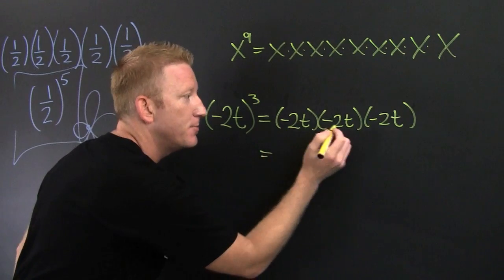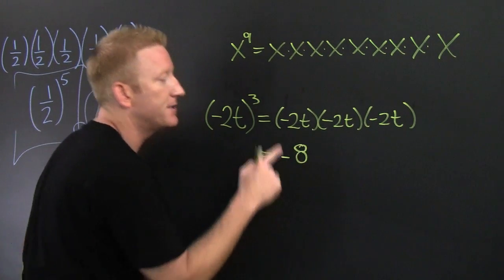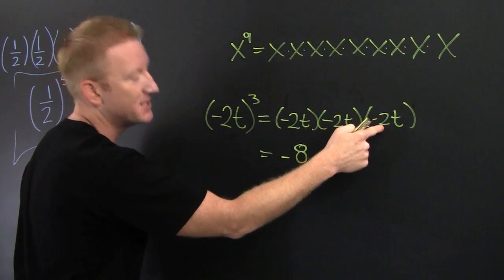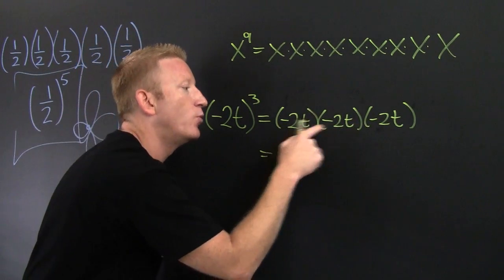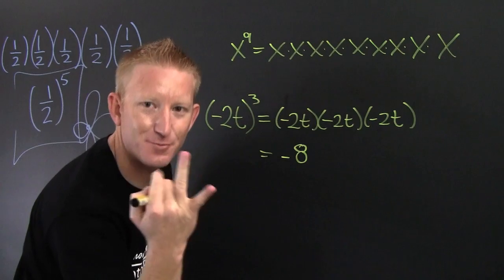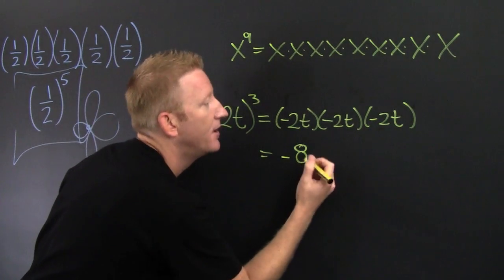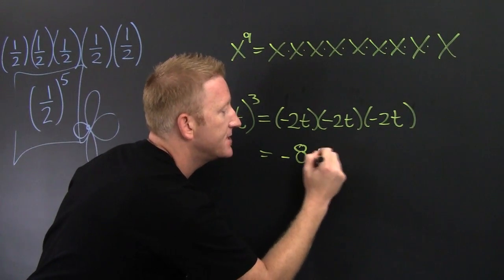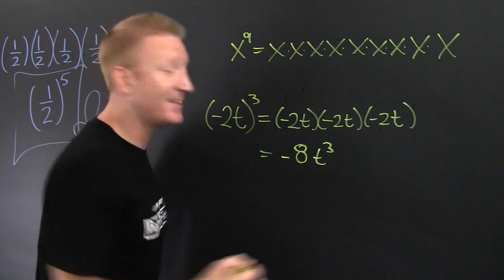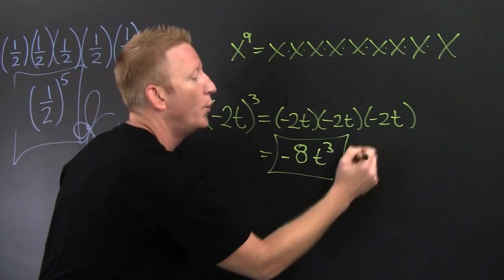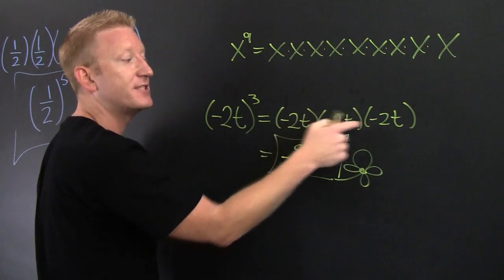Minus two times minus two times minus two is minus eight, because minus times minus is plus, times minus is minus — flip, flop. T, not once, not twice, but three times — that's t to the third. So the answer is negative eight t to the third. That was another application of expanding exponents.